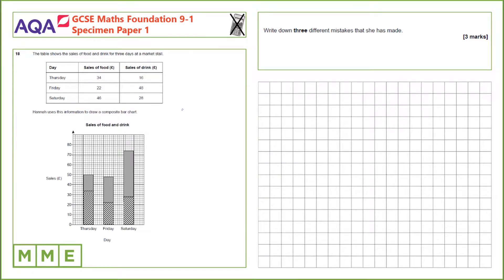Question 18. The table shows the sales of food and drink for three days at a market store. Hannah uses this information to draw a composite bar chart. Write down three different mistakes that she has made.